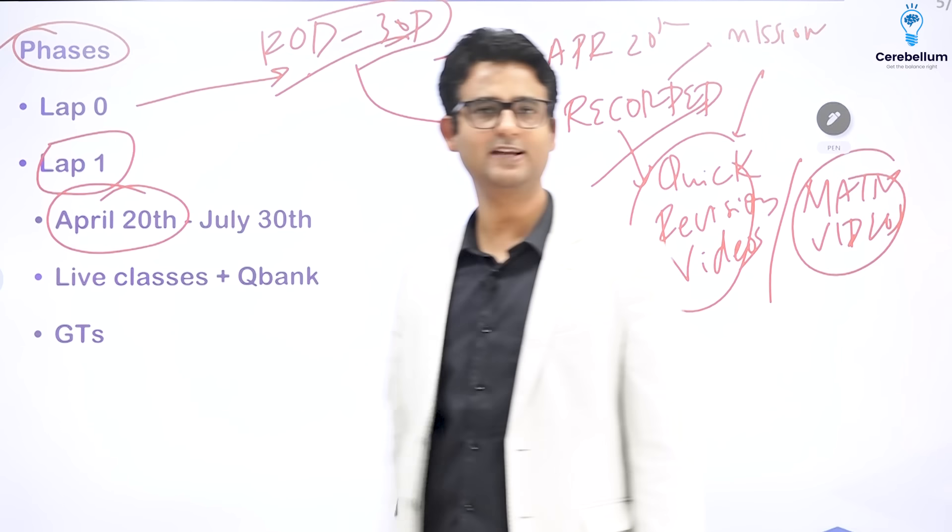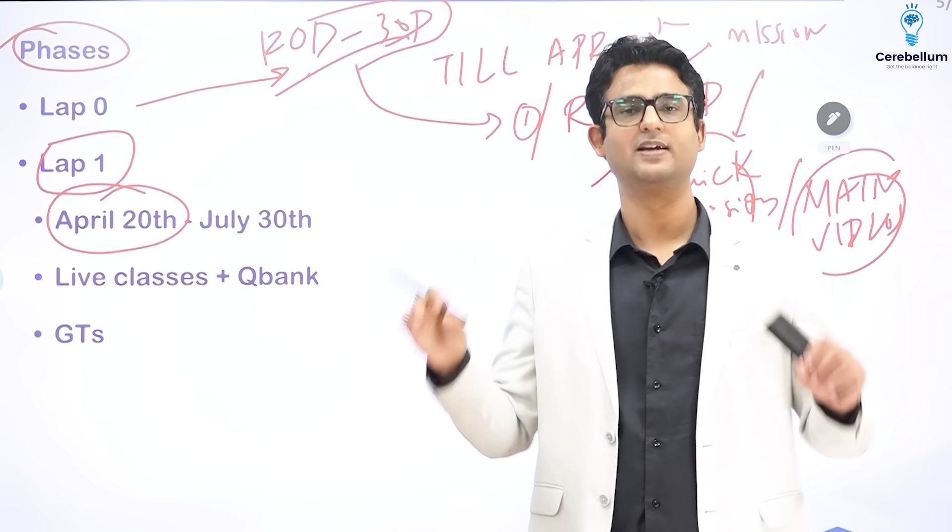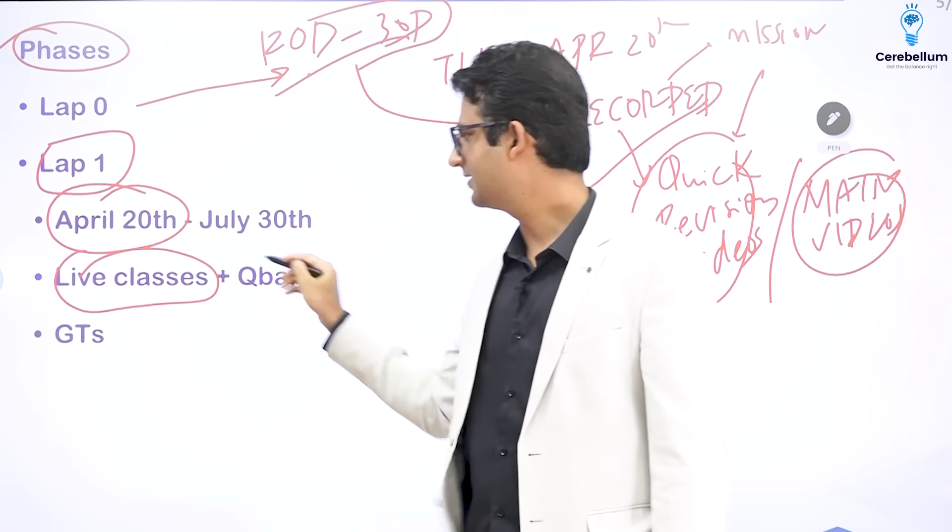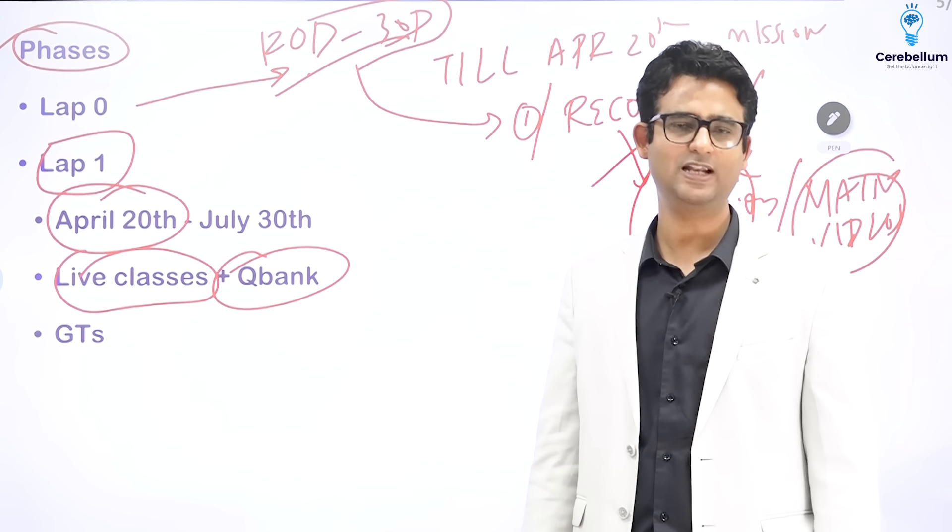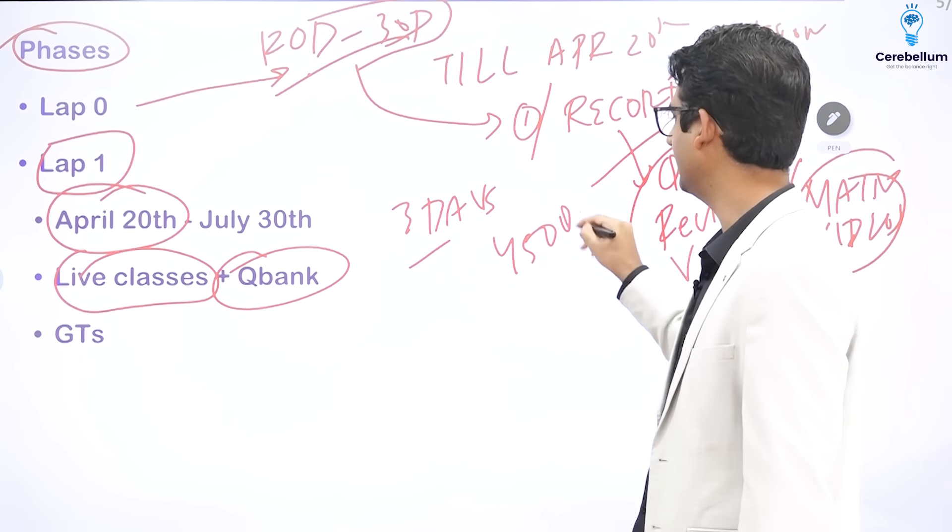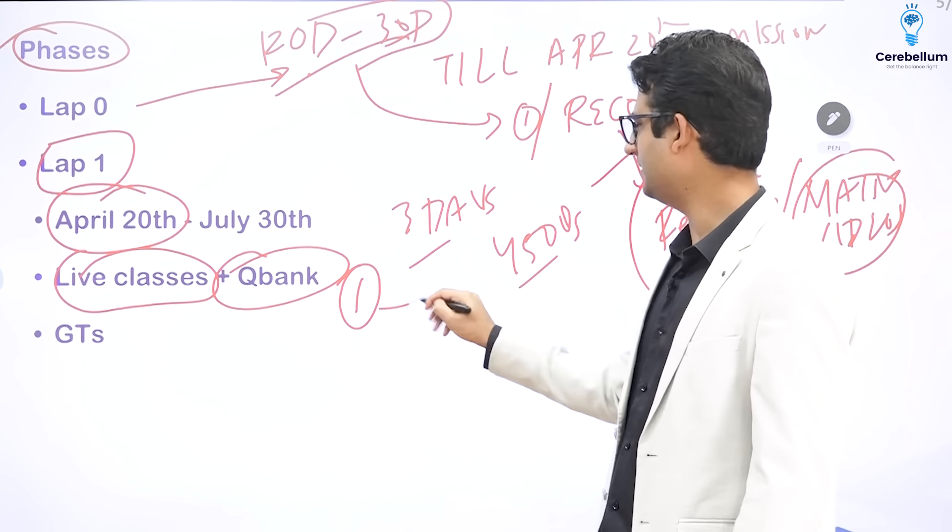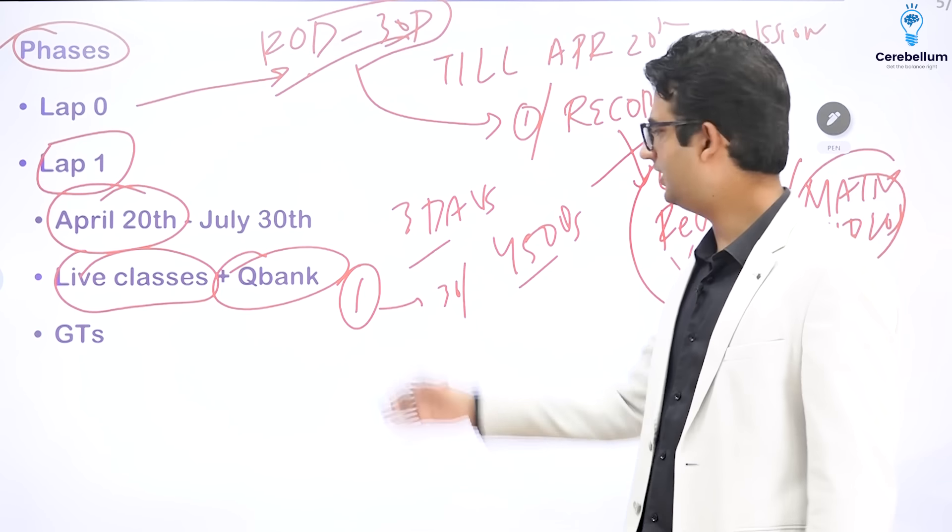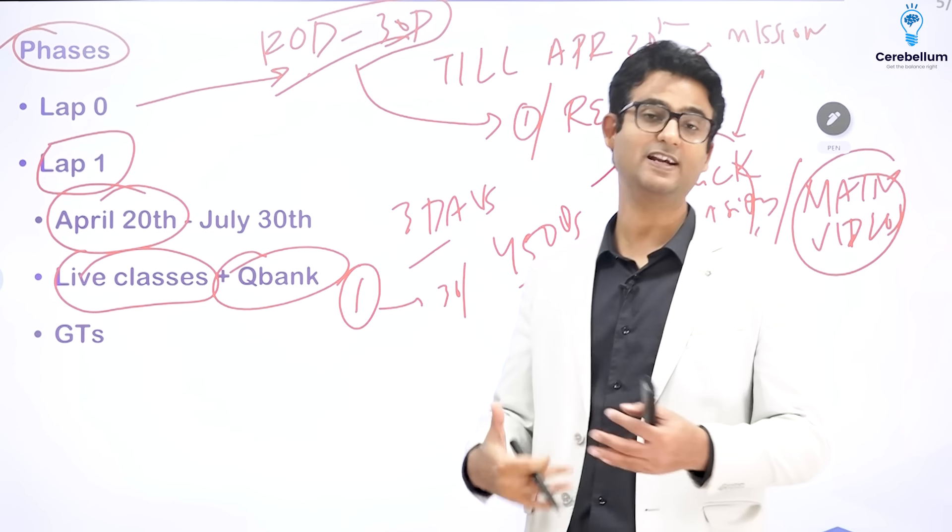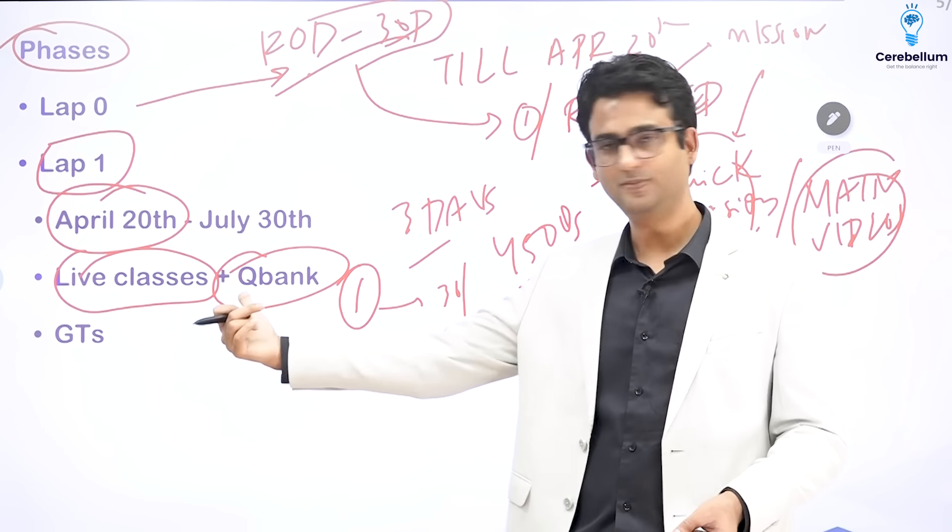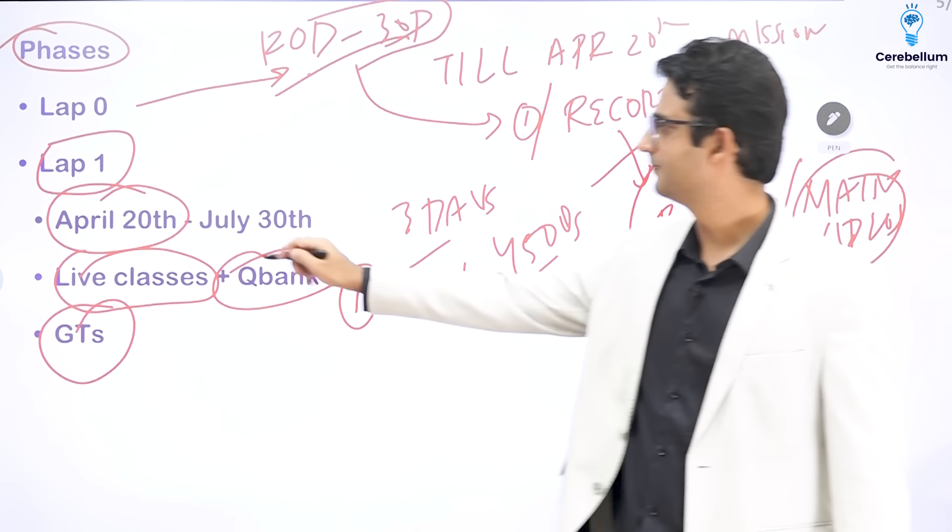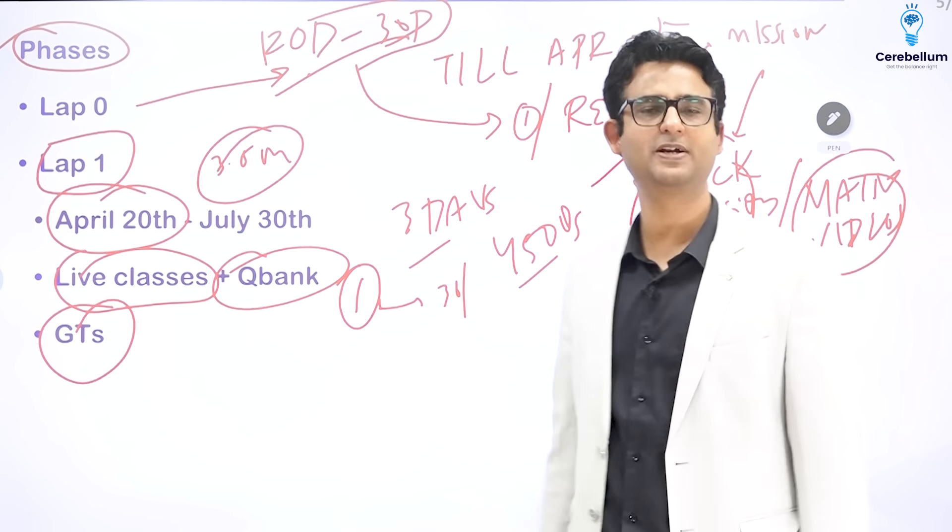Then we have lap 1. In lap 1, as I said, all the 19 subjects would be covered comprehensively live. You can interact with the faculty. You can ask questions. And the good thing is after the live class, this time will also help you complete the queue bank. So say I am taking live class for 3 days and say I have got 400 or 450 questions in my psychiatric queue bank. So I complete the chapters of day 1 and then maybe I go ahead and discuss 30 or 40 questions. Similarly, day 2, day 3. So by the end of the third day, I have covered almost one third of the queue bank as well. And I am doing it right after the class. So it is very easy for you to understand it. So live classes plus queue bank. GTs will keep on happening once every 2 week or once every 20 days that you have to take. So this is lap 1. Almost 3 and a half months in which you will try to complete the entire course.